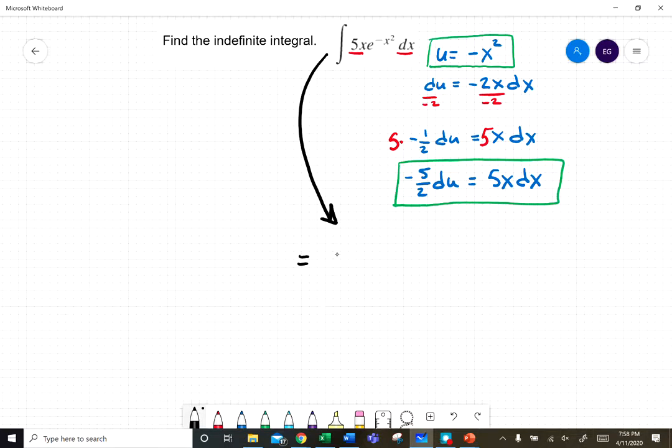This should be negative 5/2 times the integral of e to the u du. And we know that the integral of e to the u du is e to the u.